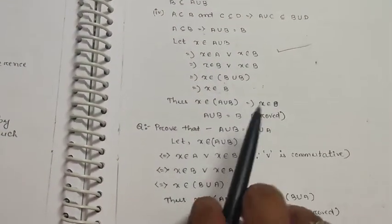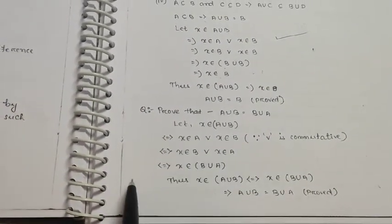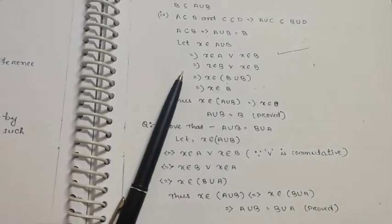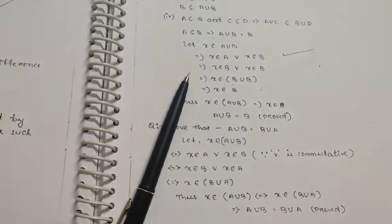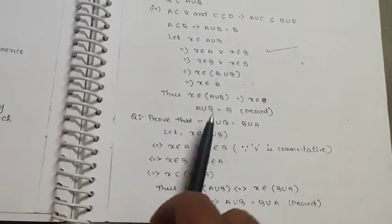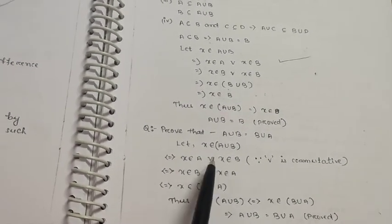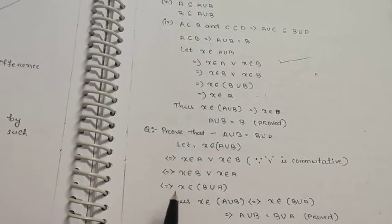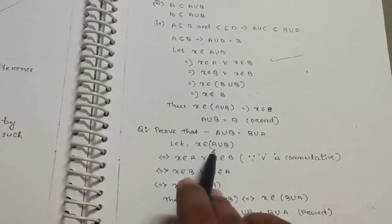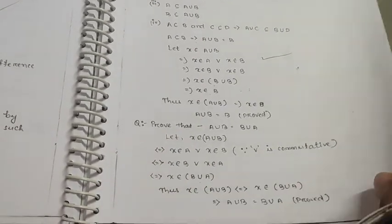Prove that A union B equals B union A — union is commutative. Let x belong to A union B, meaning x belongs to A or x belongs to B. That means x belongs to B or x belongs to A, which means x belongs to B union A. Thus A union B equals B union A.